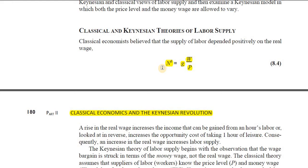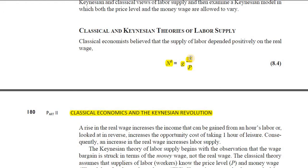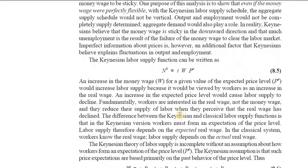There is no confusion or contradiction between classical and Keynesian on this: both agree that labor supply is a function of the real wage. But what sort of real wage — actual or expected? Real wage means W divided by P. The classicals were of the view that labor is very intelligent, knows everything, and is concerned with the actual real wage — labor knows the current prevailing prices.